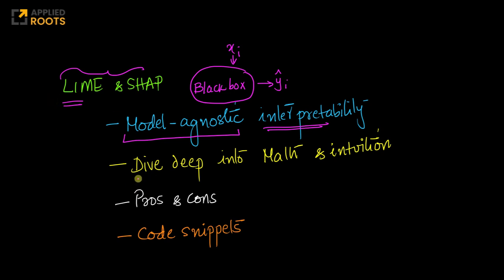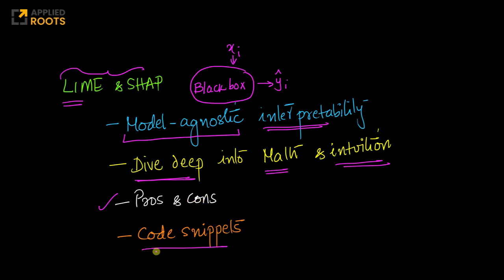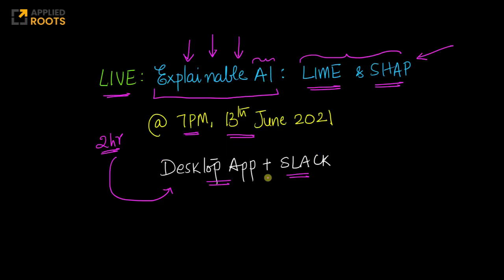In this live session, we will dive deep into the underlying mathematics of LIME and SHAP as much as possible. We will also provide geometric intuition so that you understand these techniques from first principles. We will discuss the pros and cons and where these techniques can be applied and where they might be harder to apply. We will also go through code snippets so you learn how to apply these techniques to real-world problems. See you on the coming Sunday at 7 p.m. — Explainable AI is becoming more and more important and essential for modern advanced deep learning systems.